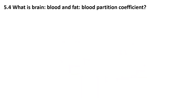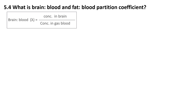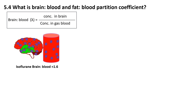The brain-blood partition coefficient describes the relative solubility of a gas in brain tissue versus blood. For isoflurane, it is approximately 1.6, meaning that at equilibrium, the concentration of isoflurane in the brain is 1.6 times higher than in the blood. This allows isoflurane to rapidly distribute into the highly perfused brain tissue, leading to a relatively quick onset of anesthesia. However, because the solubility is not extremely high, isoflurane also clears from the brain at a reasonable rate, contributing to a manageable recovery time.